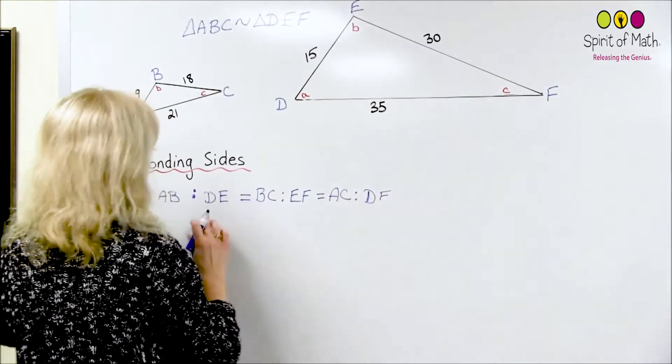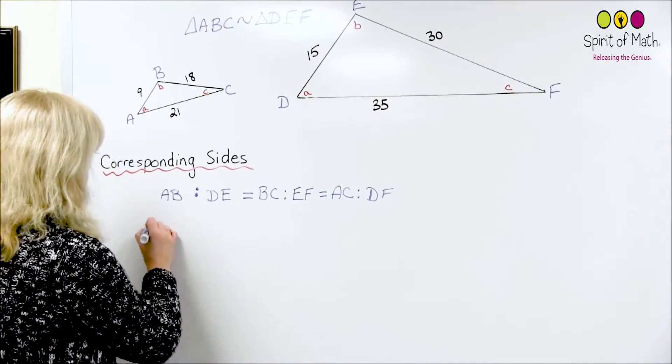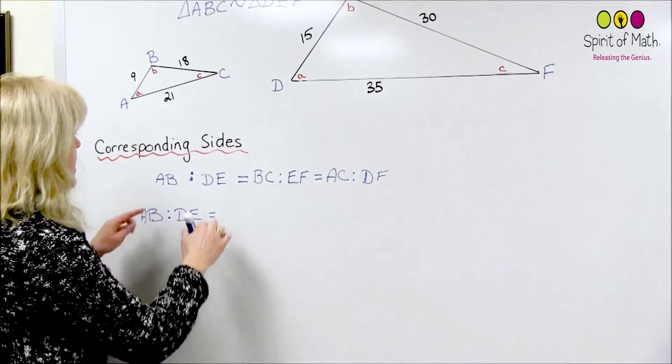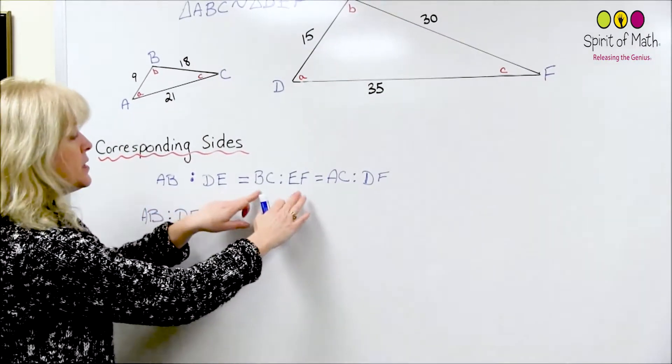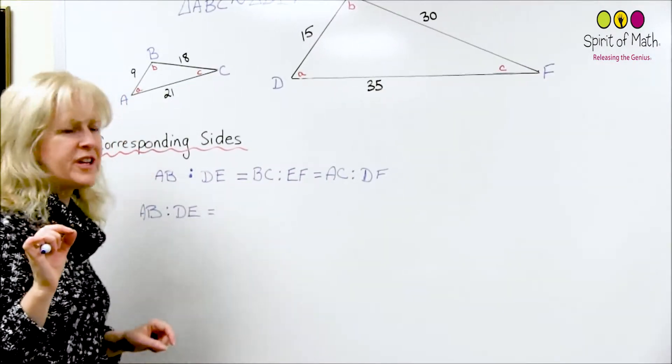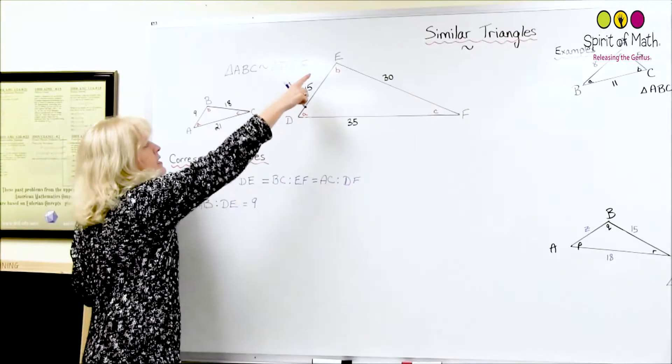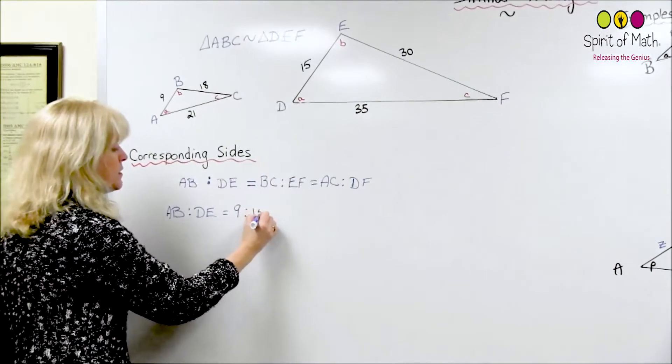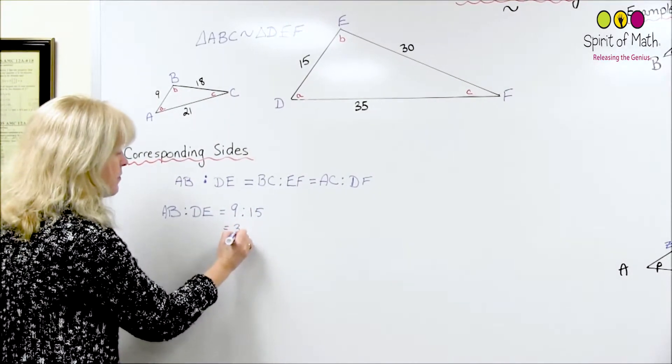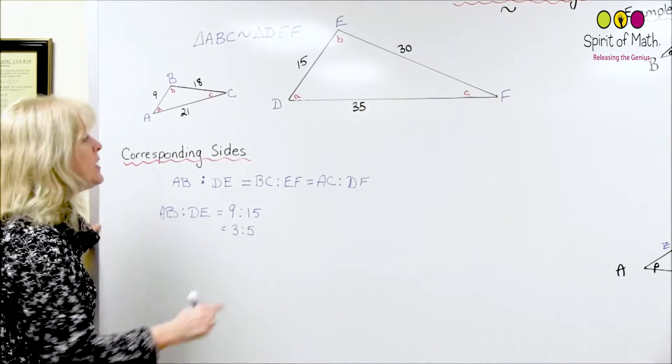And all those ratios equal to each other. So let's prove that. First of all, and this is part of what a similar triangle is all about, is that the corresponding sides, the ratio of the corresponding sides are all equal, and the angles are all equal. That is what a similar triangle is. So AB to DE, AB is 9 and DE is 15. So if you notice, if you reduce that, then what you've got is divide by 3, and you get 3 to 5, and that's the ratio of AB to DE.